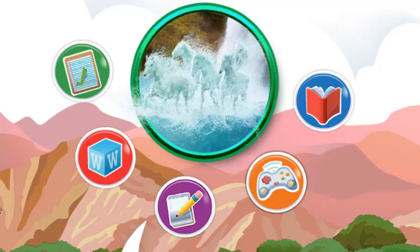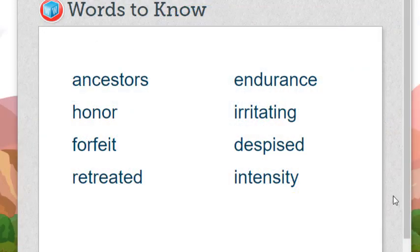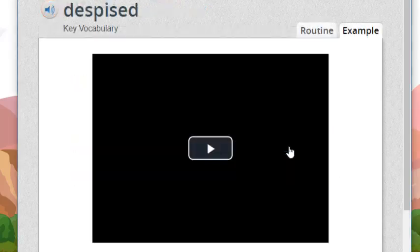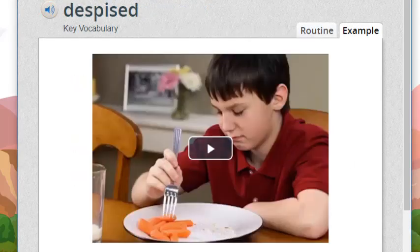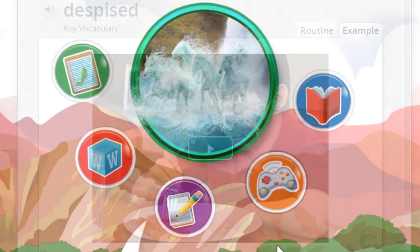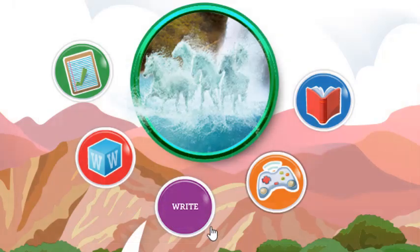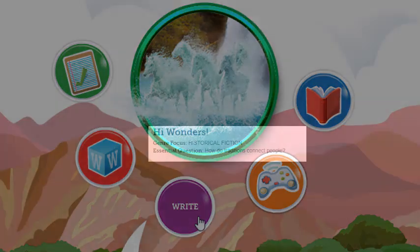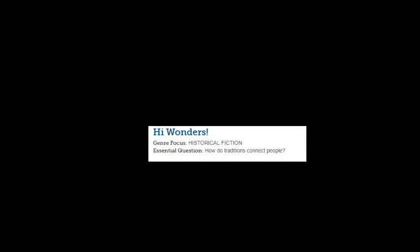Words to Know opens a window with the vocabulary words for the week. Click the links to open the visual vocabulary cards for this week's vocabulary list. Clicking Write opens the Writer's Notebook, so you can access these workshops.